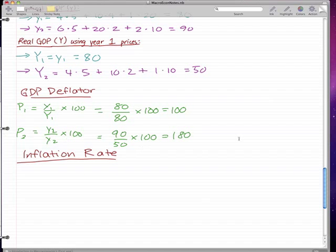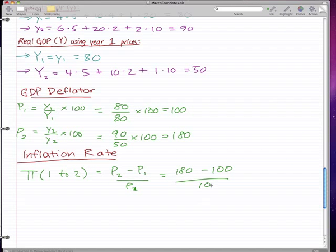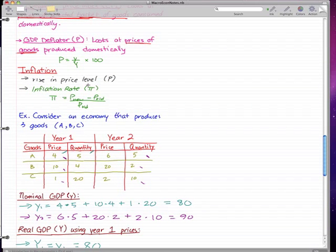So π from 1 to 2. What we're doing here is we're basically doing P2 minus P1 over P1, and that'll give us 180 minus 100 over 100, which is 80%. Because that's the formula, right? The inflation rate, or π, is equal to the new price minus the old price over the old price.